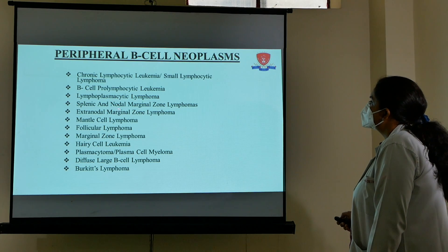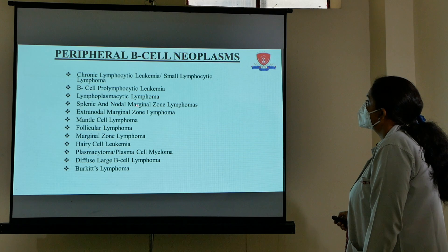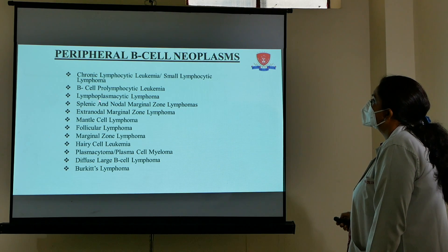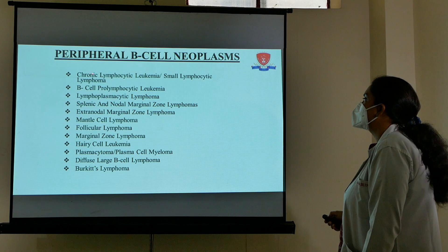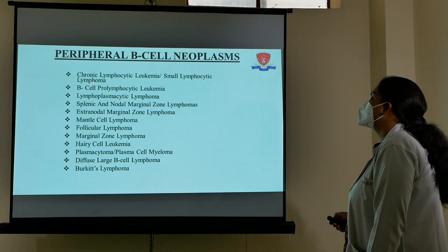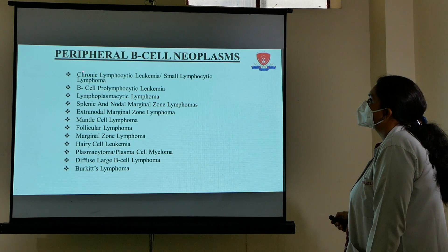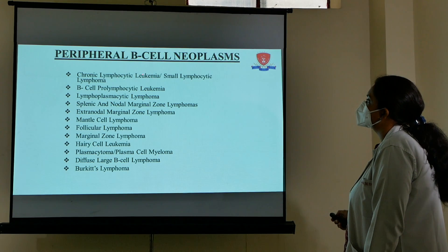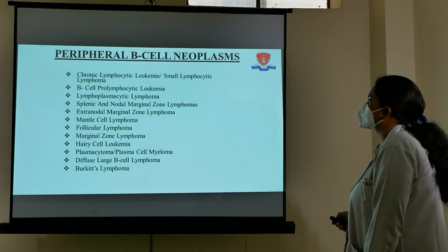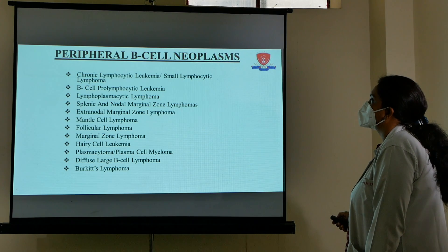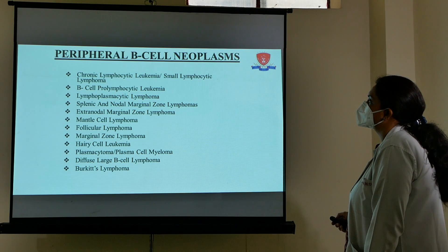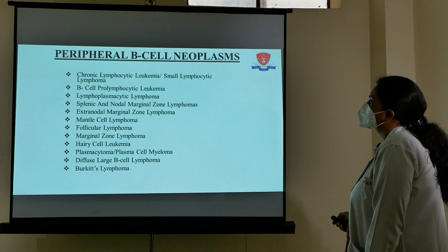The classification of peripheral B cell neoplasms is quite extensive. The names can be remembered based on the cell type and the location within the lymph node. For example, chronic lymphocytic leukemia (CLL) and small lymphocytic lymphoma (SLL) — 'chronic' means long-standing, 'lymphocytic' means small lymphocytes are seen. When seen in the blood it is called leukemia; when only in lymph nodes, it is a lymphoma.